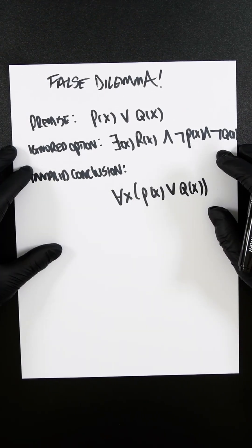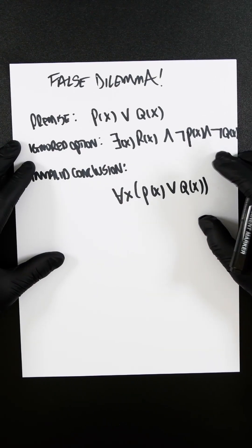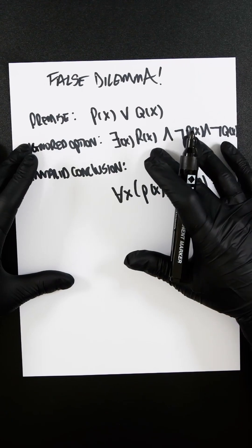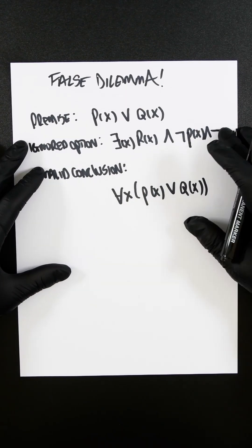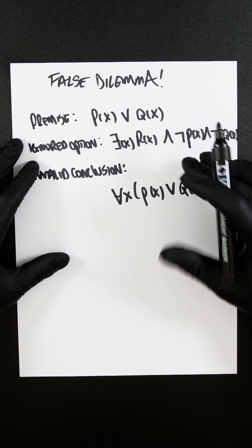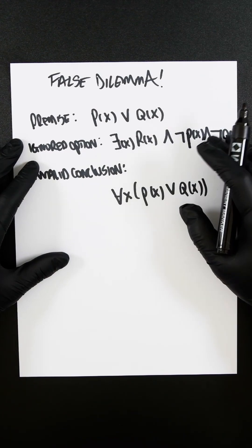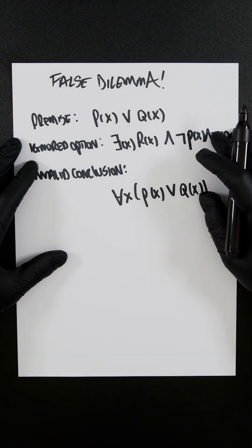...is fallacious because the premise does not entail the conclusion. There may exist other possibilities, i.e. R of x. A false dilemma in predicate logic arises when an argument asserts a disjunction P or Q as exhaustive, ignoring other possible propositions like R, making the conclusion invalid.